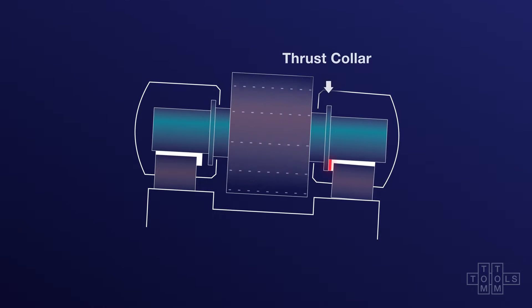In some bearings, the thrust collars are mounted close to the roller. In this case, the downhill bearing receives thrust load.